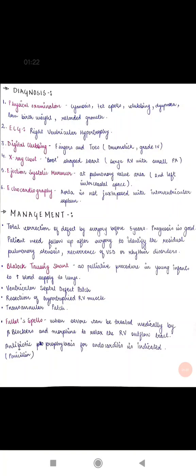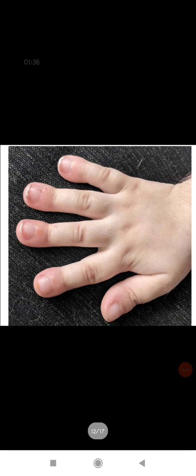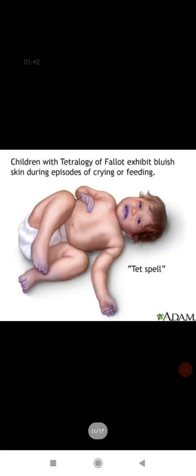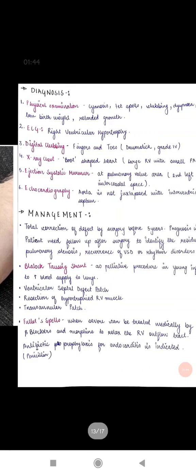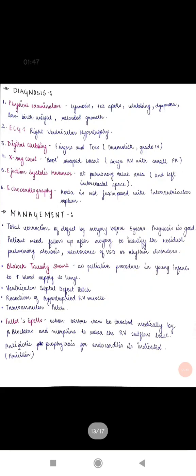So these are the physical symptoms which we can see. Then ECG which would show right ventricular hypertrophy. Digital clubbing can be seen, fingers and toes drum string clubbing would be seen of grade four. So this type of clubbing would be seen in the babies and this is tet spell or hypercyanotic episodes. X-ray chest would show boot shaped heart because of large right ventricle with small pulmonary artery.